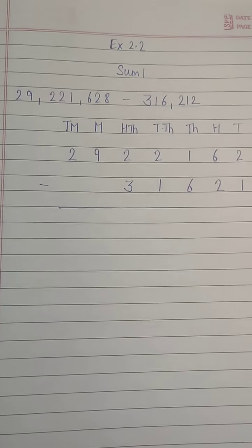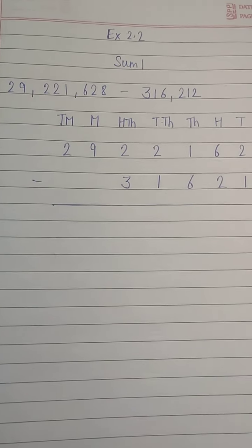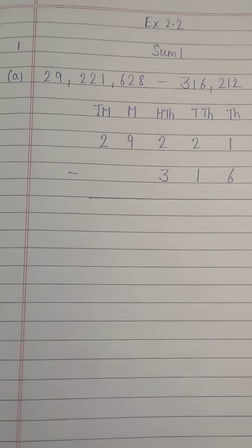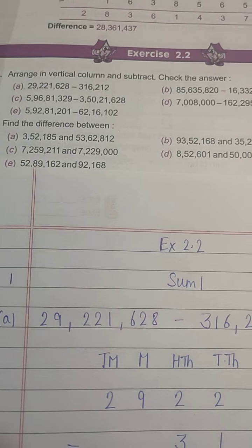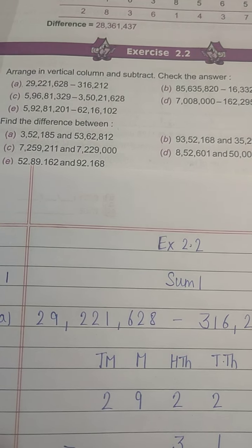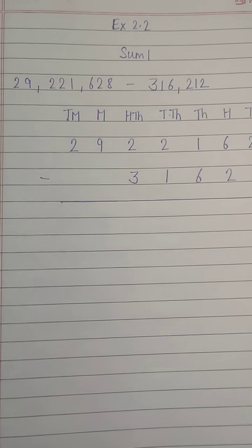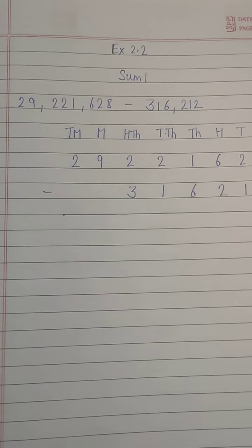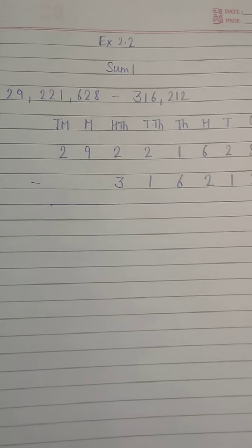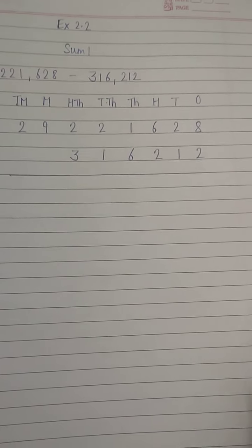Greetings students, hope you all are fine. So today we will do exercise 2.2 sum 1. We have to arrange in vertical columns and subtract and check the answer. I have already written here the number 29,221,628 — I just fixed their places and written in this form. Now we will do the subtraction.